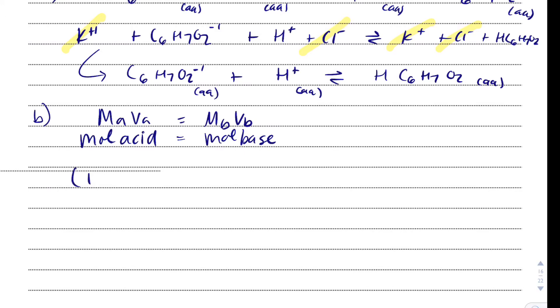So the molarity of the acid is 1.25 molar. The volume of the acid that we used was 29.95 milliliters. The molarity of the base, the potassium sorbate, is unknown. But the volume of the base, they told us, was 45 milliliters. So I'll divide each side by 45, and MB is going to end up being 0.832 molar.